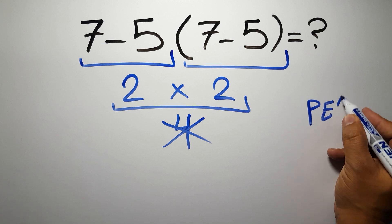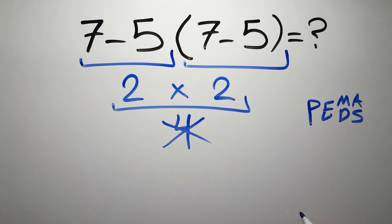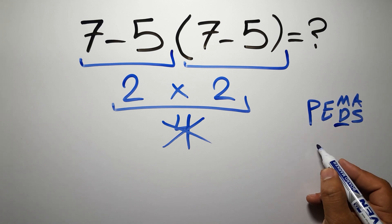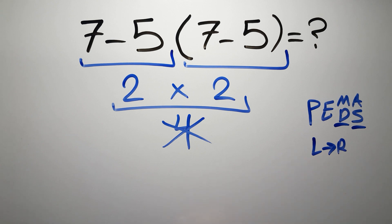do parentheses, then exponent, then multiplication or division, and the final addition or subtraction. Remember that multiplication and division have equal priority and we have to work from left to right, and the same applies to addition and subtraction.